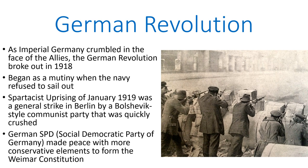Due to the extreme fear of Bolshevism inspired by what had occurred in Russia, many elements of society banded together to put this uprising down brutally. After the Spartacist uprising, the German SPD — the Social Democratic Party of Germany — made peace with more conservative elements and they agreed to form the new Weimar Republic and to make peace officially with the Allies.